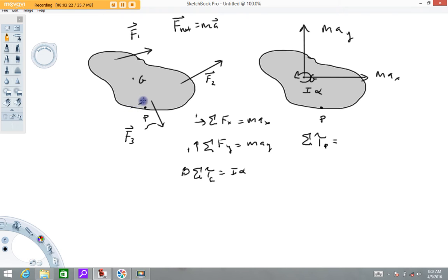Force 2 acts along this line. So force 2 times this distance gives torque about P. Force 1 acts along this line. So F1 times this distance gives the torque about P. I can pick any point on this body and sum torques about that point.